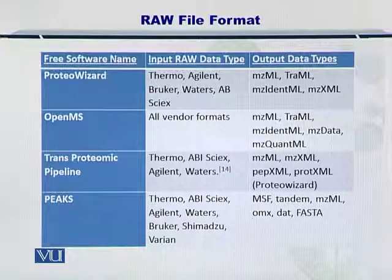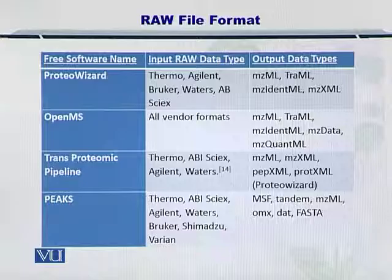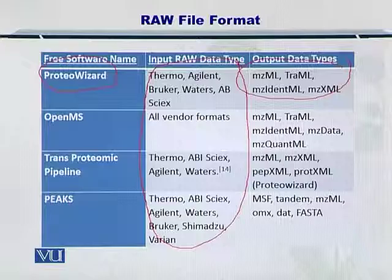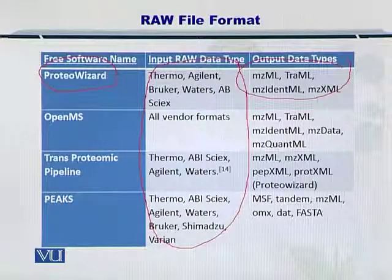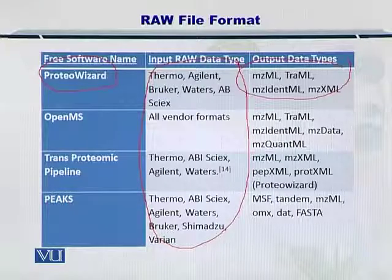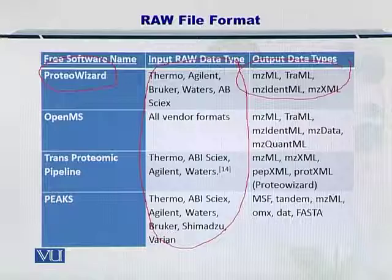You can just choose which mass spectrometer you have by looking at this column and then use the corresponding software in the next column. In this way, you can convert any raw file format from any mass spectrometer into standard MZML, MZ data, or MZXML file formats. This is very useful for the research and development of new algorithms.